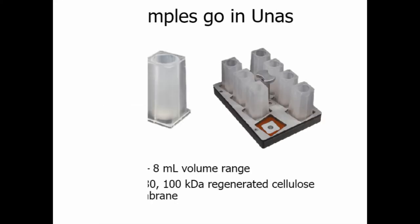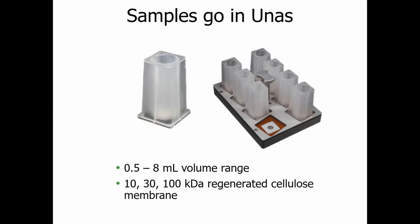Let's get started with the consumable — the Una. This is where your samples go in. The single Una on the left has an 8 ml volume range with a working volume down to half a mil. You can process up to eight of them in the sample rack. Customers like that they can take the sample rack to their bench, pre-wet the Unas with DI water or buffer, let them sit for a few minutes, pipette their sample in, lock them into place, and then take it to Unagi. Membrane options are 10, 30, and 100 kilodalton, made from regenerated cellulose, which doesn't have strong binding affinity for many of these biomolecules.